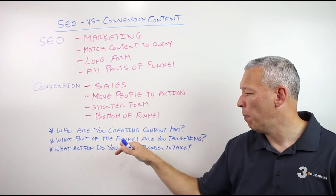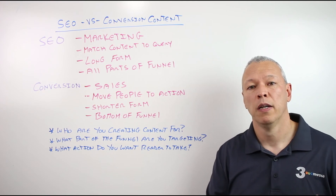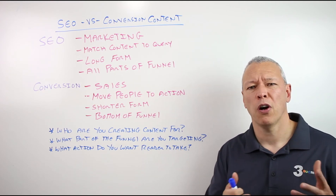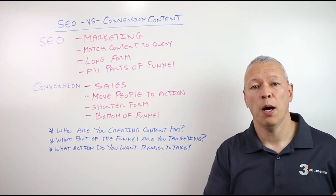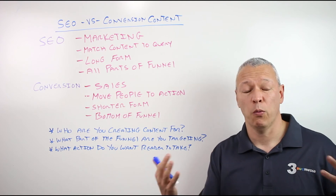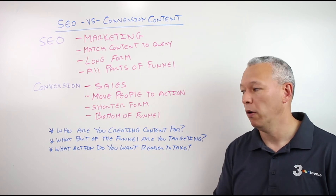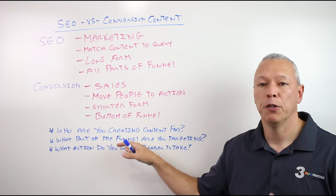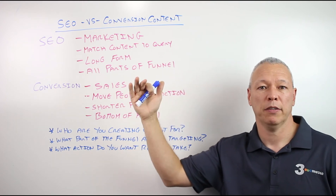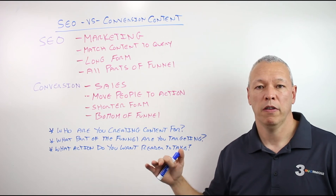Number two: what part of the funnel are you targeting? This is important because if you're creating content expecting to get leads or sales out of it, but your topic is targeting the top of the funnel — people who are still far from taking action — you need to rethink that. Top of the funnel content is good if you're just trying to get people on your email list, but if you're trying to get a sale, you need to make sure you're targeting the bottom of the funnel.